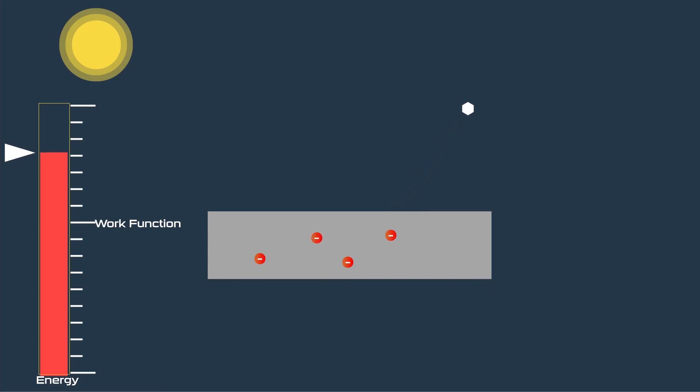The photoelectric effect requires that photons have a minimum required amount of energy. Low energy photons are not able to eject from the metal surface. The corresponding frequency of this minimum energy is called the threshold frequency.